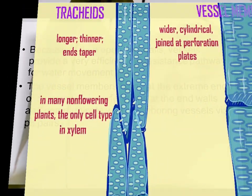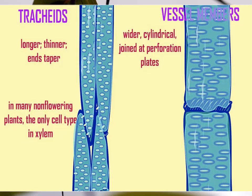The arrangement of tracheids is lateral and end-to-end, while vessel elements attach to each other end-to-end — not laterally — forming a pipe-like structure. When many vessel members attach end-to-end, they form a column structure called a vessel — a continuous cylindrical pipe for water conduction.